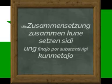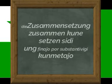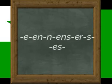Zusammensetzung — kunmeto, kunmetetzo, kunmetaĵo. De susamen — kune, and zetzung — meto or metetzo. When we have kunmeto, the connective part in Tagebuch — taglibro — is used to make pronunciation easier. This connective can be -en-, -n-, or -es-.